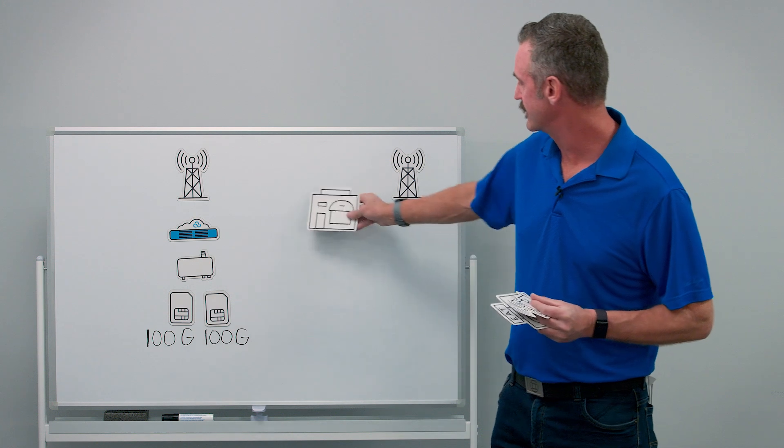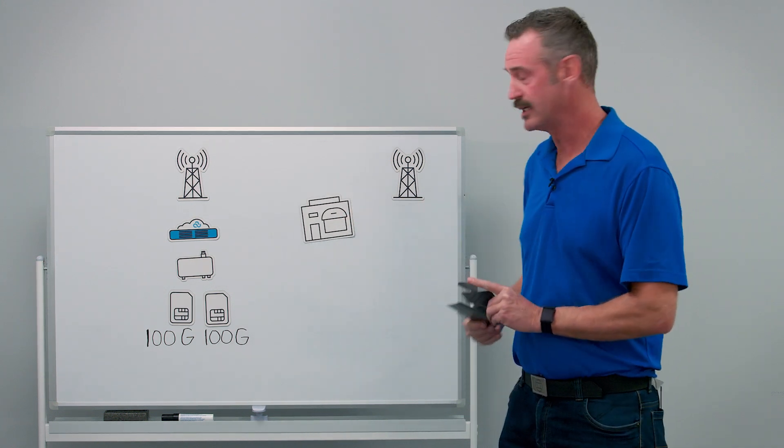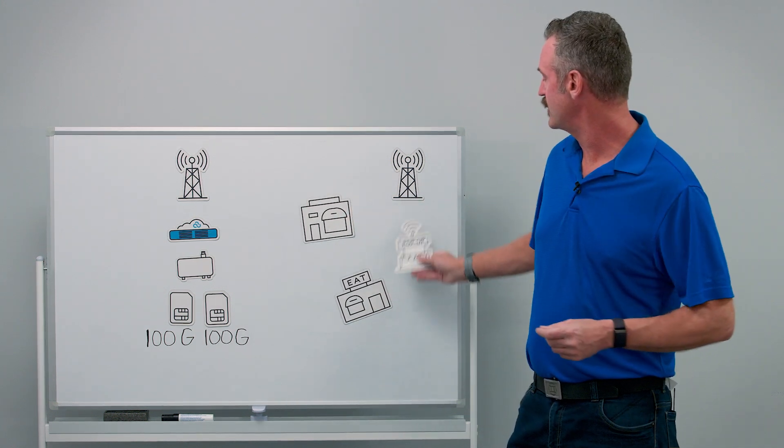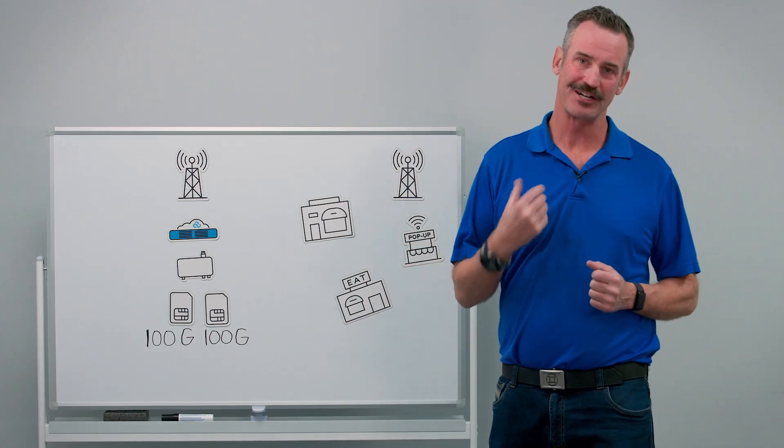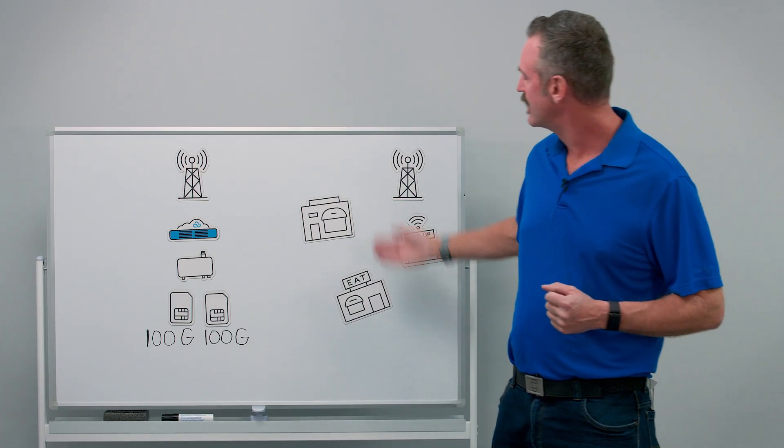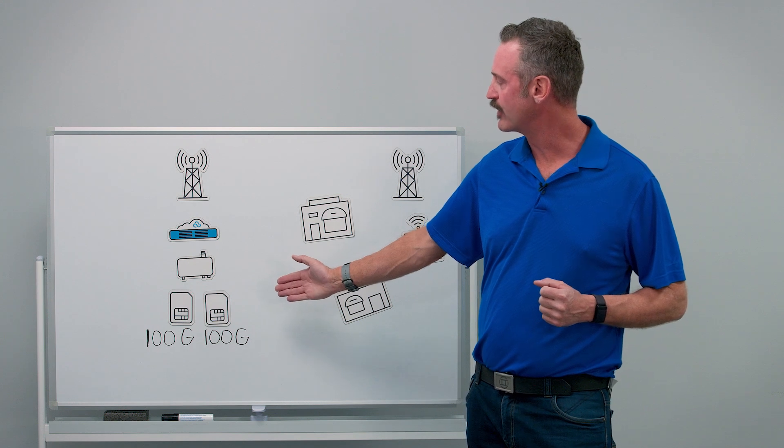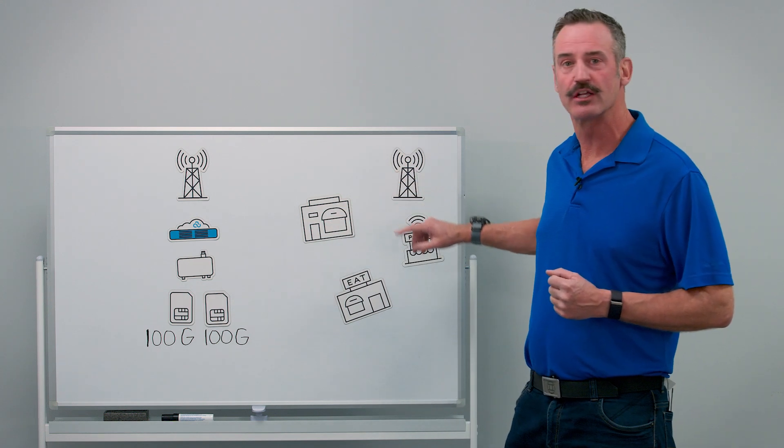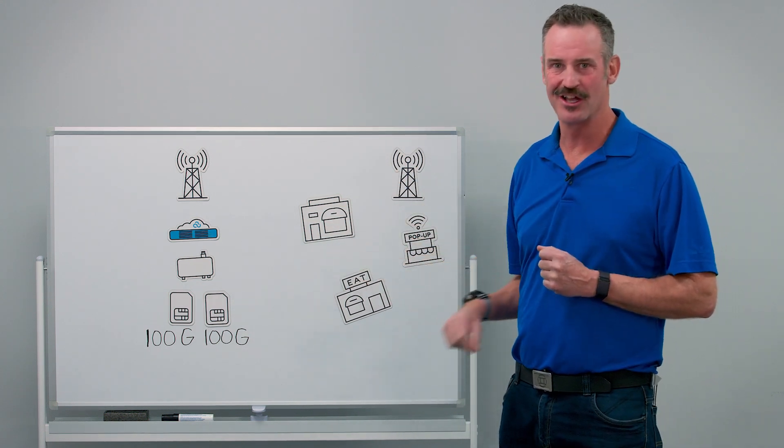The other use case I'd like to discuss is deploying to multiple geographic locations. We can take advantage of our carrier selection intelligence to identify the appropriate carrier per geographic location and shut down the unused SIM.